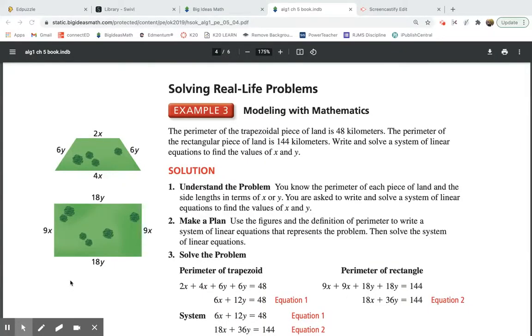So a real life problem. Says the perimeter of the trapezoidal piece of land is 48 kilometers. So we have this trapezoid over here and some land. Got some trees on it. It's 48 kilometers. That's the perimeter. Perimeter is when you add up the outer edge. It's the distance around something. Okay. So the perimeter of the rectangular piece of land is 144 kilometers. Write and solve a system of linear equations to find the values of x and y. Okay. That shouldn't be super difficult to set those up. Because that basically means if I add all these up, it would equal 48 kilometers. But I have 2 that have x's and 2 that have y's. You can combine those.